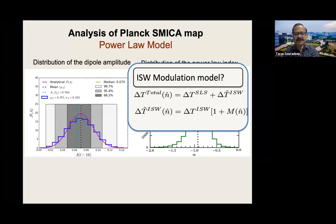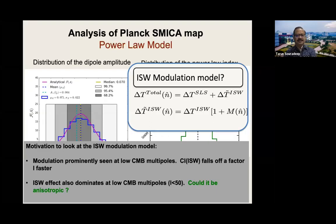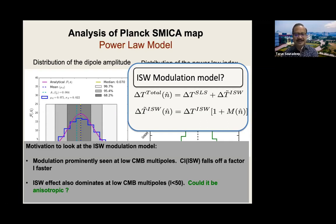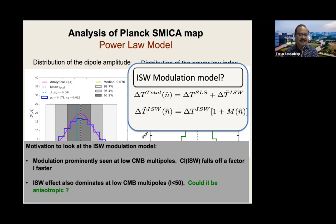This ISW connection is intriguing but hasn't been looked at carefully. It would require a very gross statistical isotropy violation in the ISW part of the signal, which would naturally explain the scale dependence of the asymmetry — if only the ISW part is affected, that immediately explains why the asymmetry is not seen at high multipoles and possibly why it is not seen in polarization. The extent that it has been checked, no signal is seen in the polarization map.